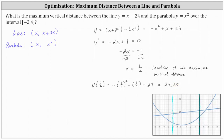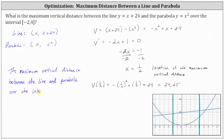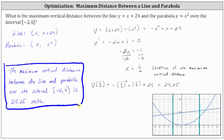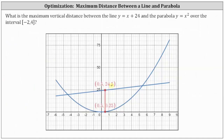The maximum vertical distance between the line and the parabola over the closed interval from negative 2 to positive 4 is 24.25 units. We can verify: when x equals one half, the point on the line is (0.5, 24.5) and the corresponding point on the parabola is (0.5, 0.25), and 24.5 minus 0.25 equals 24.25. I hope you found this helpful.